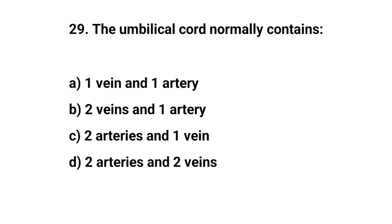Question number twenty-nine. The umbilical cord normally contains? The right answer is C: two arteries and one vein.